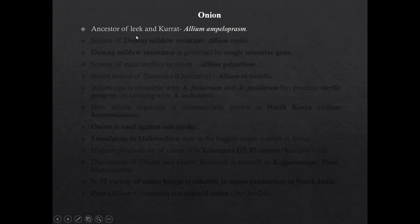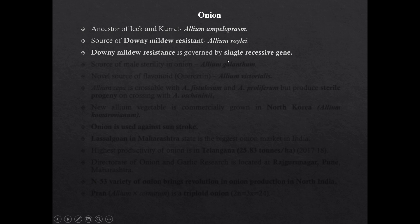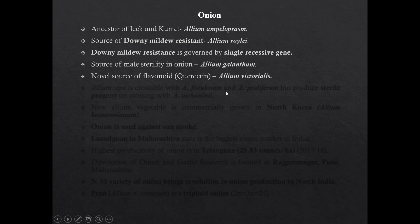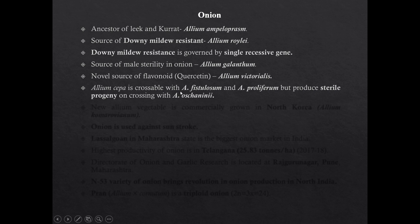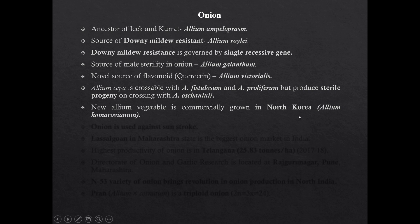Ancestor of leek and kurrat is Allium ampeloprasum. The source of downy mildew resistance in onion is Allium roylei, and downy mildew resistance in onion is governed by a single dominant gene. Source of male sterility in onion is Allium galanthum. Novel source of flavonoid in onion is Allium victorialis. Allium cepa is crossable with bunching onion and Allium fistulosum but it produces sterile progeny with Allium oxyphilum.